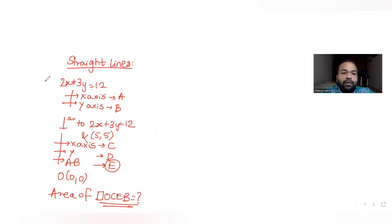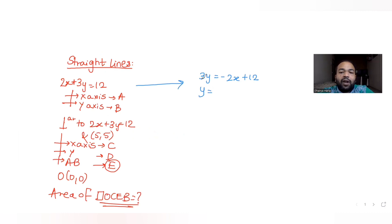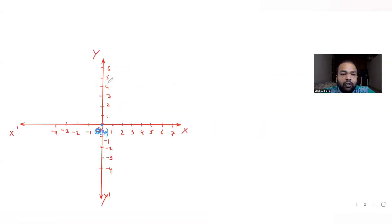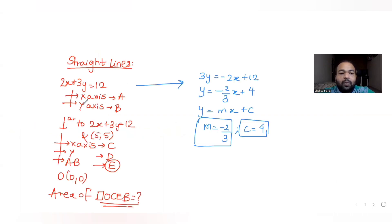Let's try to plot the first line 2x plus 3y equals 12. If I write it in the form of y equals mx plus c, then 3y equals minus 2x plus 12, and dividing throughout by 3, I get y equals minus 2/3 x plus 4. Comparing with y equals mx plus c, we get the slope of the line is minus 2 by 3. Since the slope is negative it is a descending line, and c is 4, so it intersects the y-axis at 4. So the y-axis intersection is at point B.